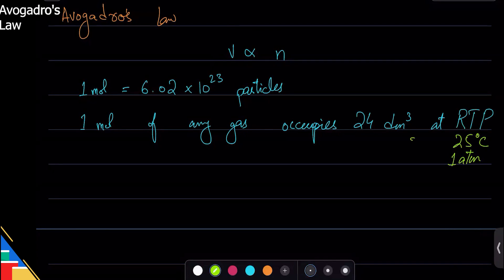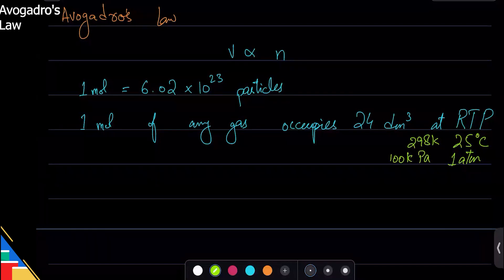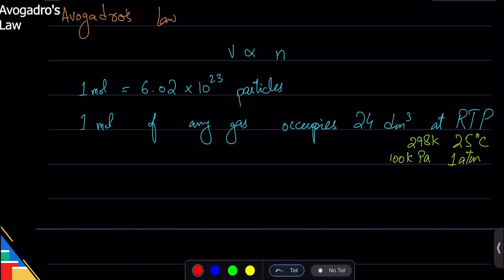I mean, 25 degrees Celsius can also be 298 Kelvin, and one atm can be one hundred thousand pascals. So roughly one hundred thousand pascals. It's up to you what unit you want to use. It's just that these are SI units and these are non-SI units.